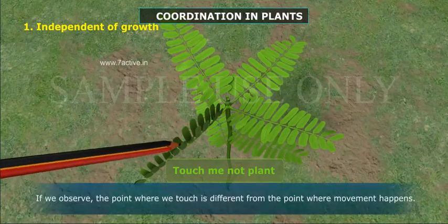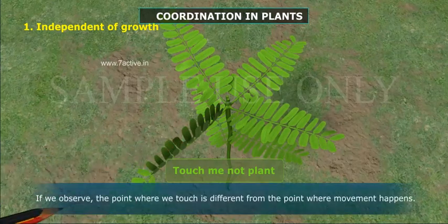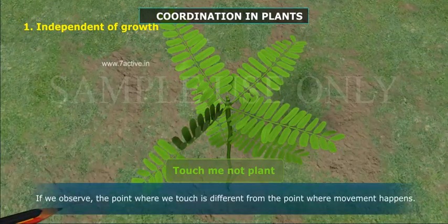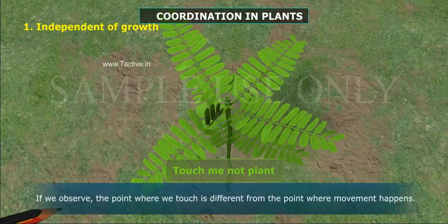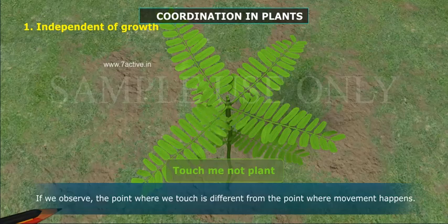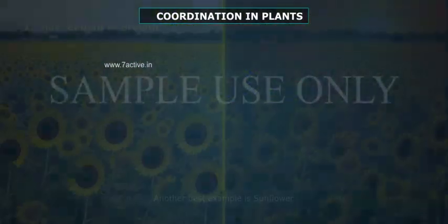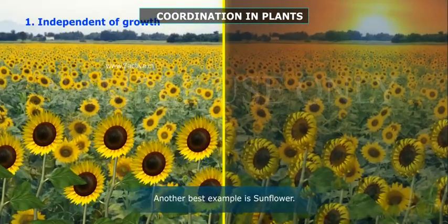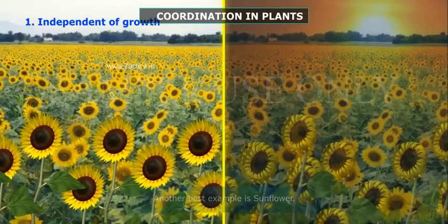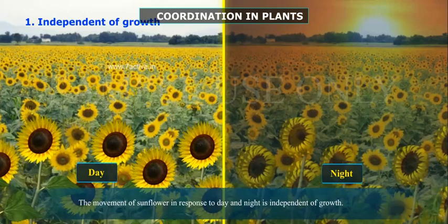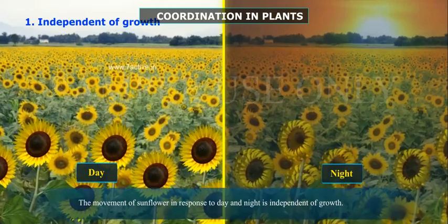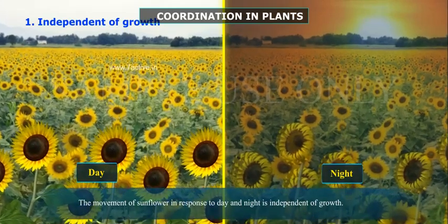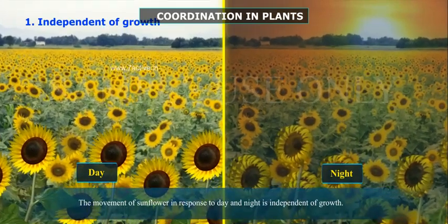If we observe, the point where we touch is different from the point where movement happens. Another best example is the sunflower. The movement of sunflower in response to day and night is also independent of growth.